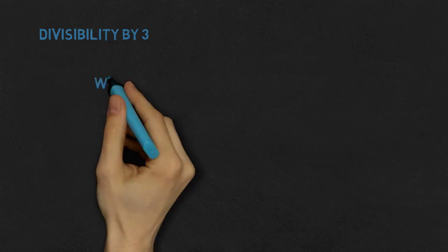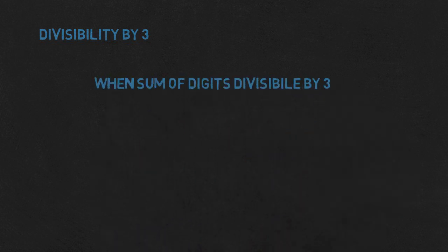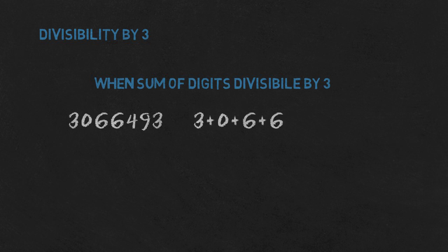Now it will be more interesting. Divisibility by 3: from school you might know a neat method — sum up the digits and check if this sum is divisible by 3. Let's take the number 3,066,493. We sum the digits: 3+0+6+6+4+9+3, getting 31. Sum 31 is not divisible by 3, so the whole number isn't either.